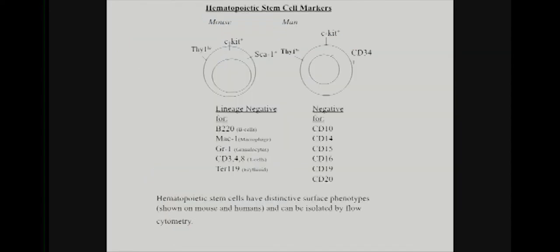In mouse, these cells have been phenotyped with FACS sorting and flow cytometry, and many surface markers were used to facilitate this. They express low but non-zero levels of the Thy1 surface marker, and they express c-Kit. The human case is a little different — they have the Thy1 and c-Kit markers plus additional markers. Irving Weissman also played a big role in finding the human stem cells. This is extremely clinically relevant — it happens all the time that we do stem cell transplantation.